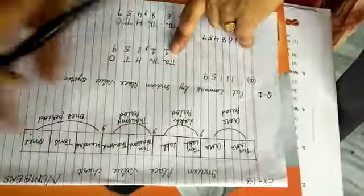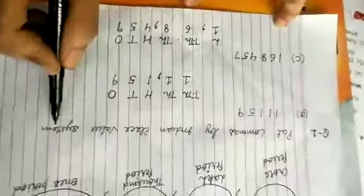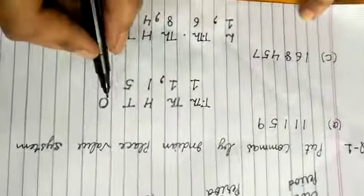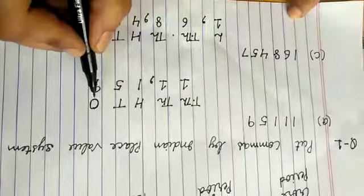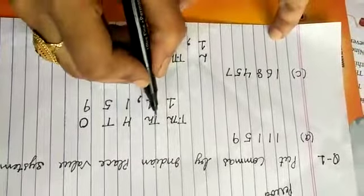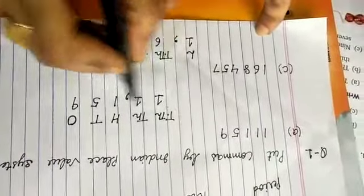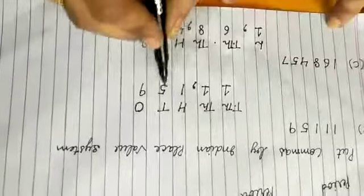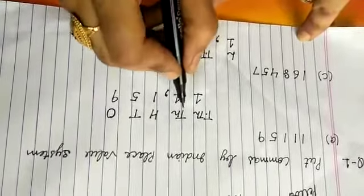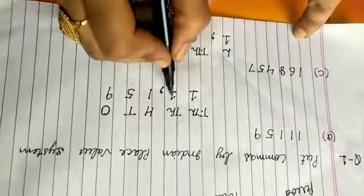Now we will do question number 1 — put commas using the Indian place value system. We have the number 11159. Firstly, write the places on each digit from the back side: ones, tens, hundreds, thousands, ten thousands. The ones period has three places — ones, tens, hundreds — so separate this period. The remaining digits are thousands and ten thousands, which form the second period.